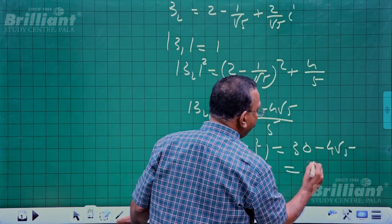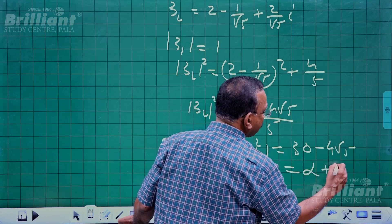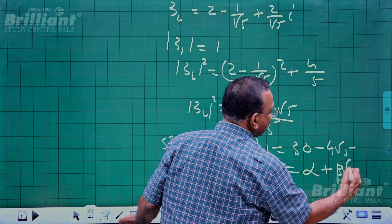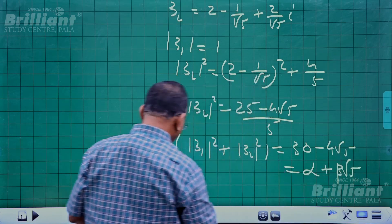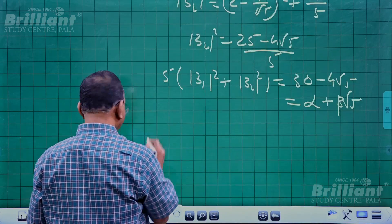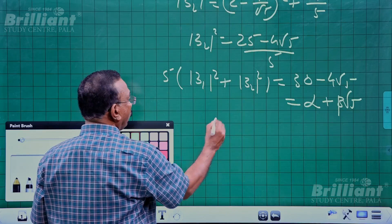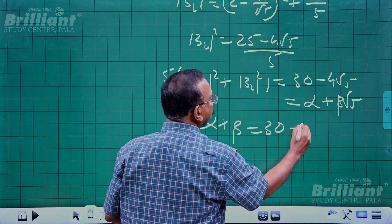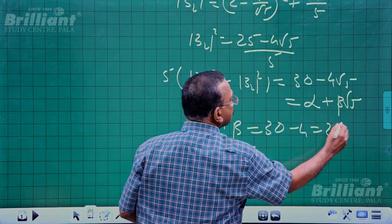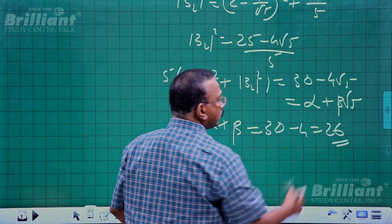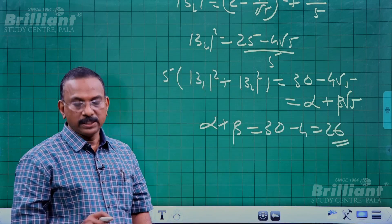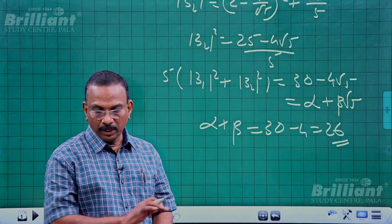This should be in the form α + β√5 as given. Therefore α + β = 30 + (-4) = 26. So the answer for this problem is 26.